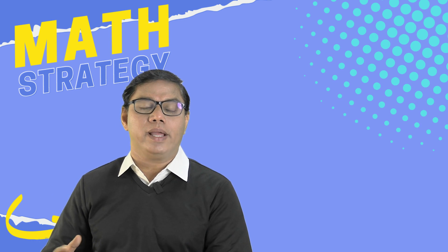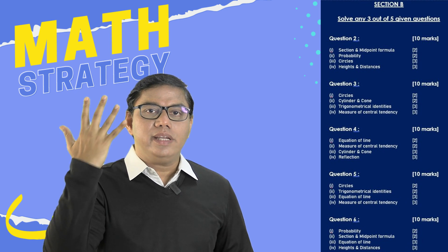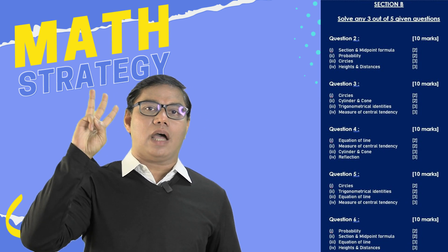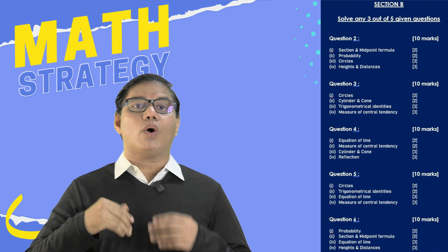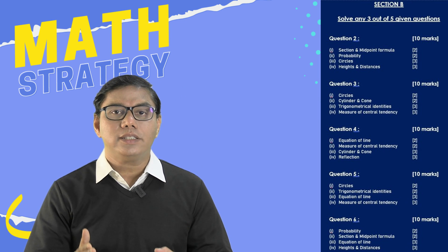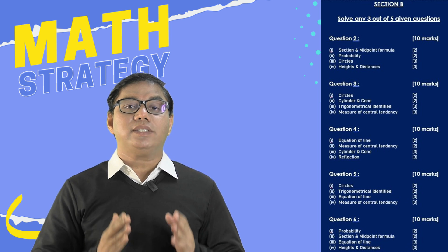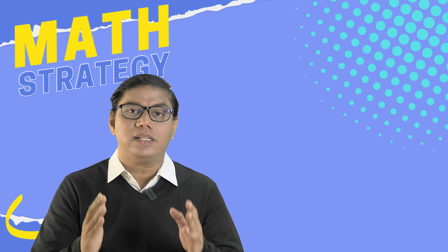Then comes question number two, three, four, five, and six. So these are five questions and you have to solve only three questions out of those five. So here you have to select three questions of your choice. To choose a correct question also requires a special skill. Yes, selecting a question also requires a special skill.